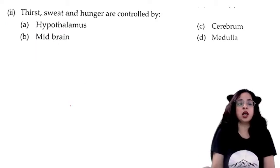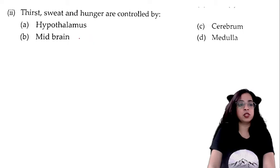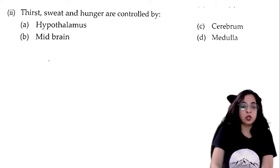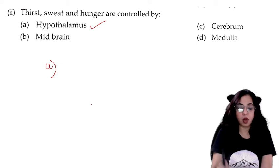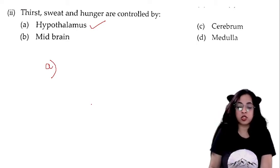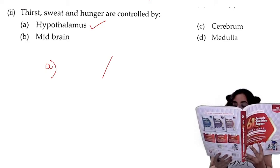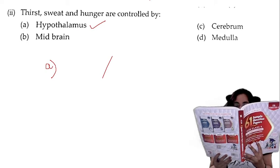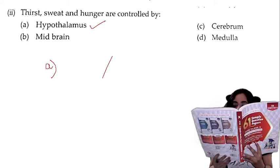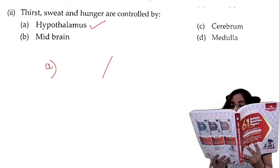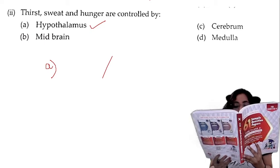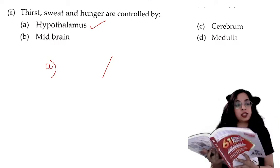Thirst, sweat, and hunger are controlled by: hypothalamus and midbrain, hypothalamus, midbrain, cerebrum, or medulla? The answer is A — hypothalamus. Hypothalamus is a part of the forebrain. It controls hormonal secretion from endocrine glands and hormones secreted from the posterior pituitary gland are released through it. It is the center of hunger, thirst, body temperature control, love, hate, blood pressure, metabolism of water, sweat, anger, and joy.